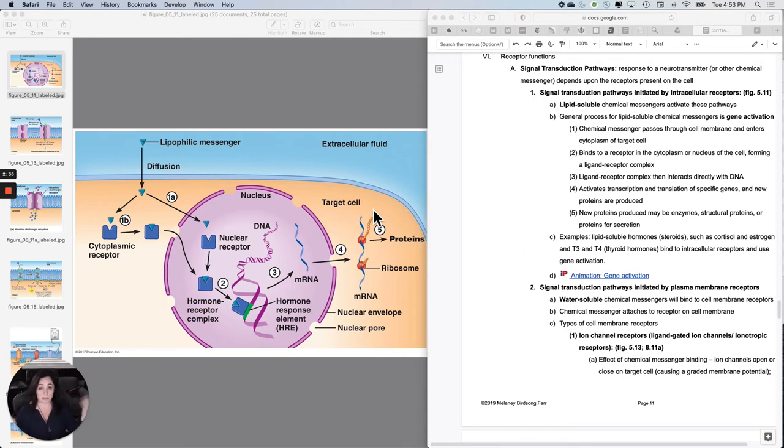That new protein could be structural. If it was, for instance, testosterone causing synthesis of myosin inside a skeletal muscle fiber could be functional, and then you would actually do secretion. So what kinds of things use this? Steroids and thyroid hormones are lipid soluble, and they very likely use gene activation as their signal transduction pathway.